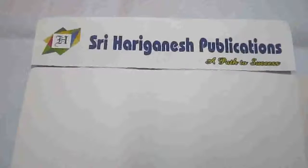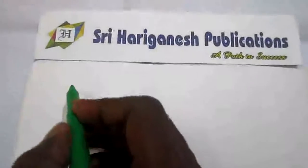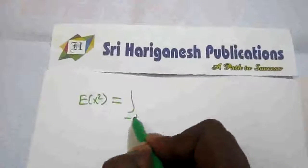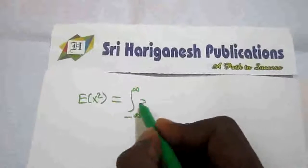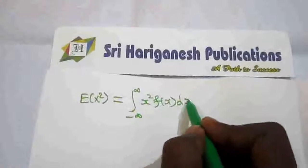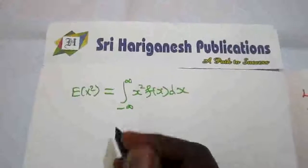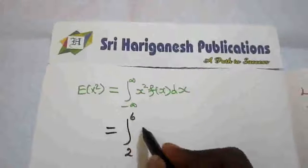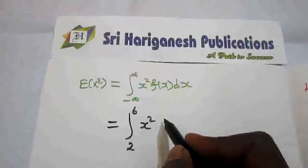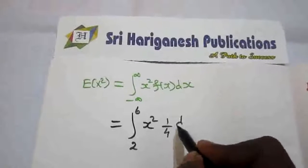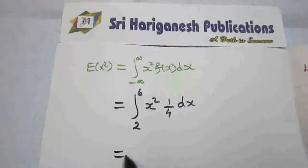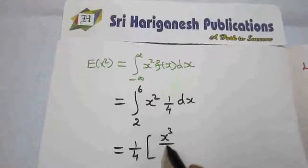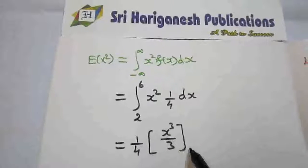Now we find E(x²). The formula for E(x²) for the continuous random variable is the integral from minus infinity to plus infinity of x²·f(x) dx. The range of x is 2 to 6, so it is the integral from 2 to 6 of x² · (1/4) dx. Taking the constant 1/4 outside, the integration of x² is x³/3, with the limit 2 to 6.